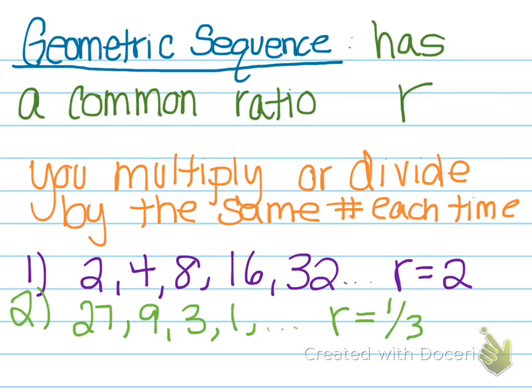And then if I gave you 1, negative 1, 1, negative 1, this would be a geometric sequence and your r value would be negative 1. So each time you multiply by negative 1, the value doesn't change but the signs alternate.